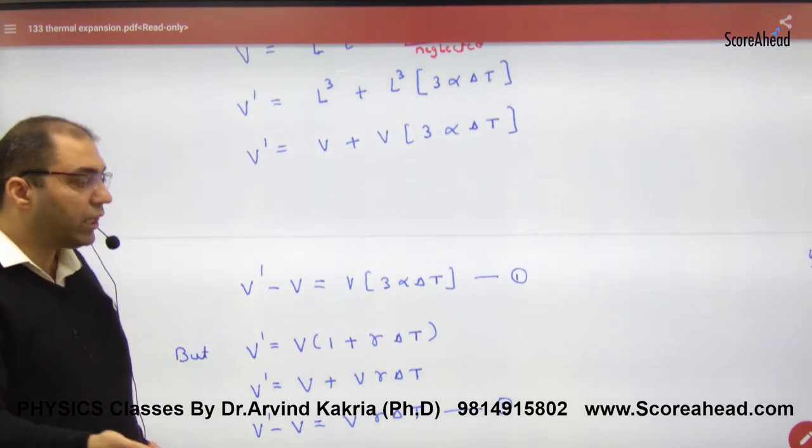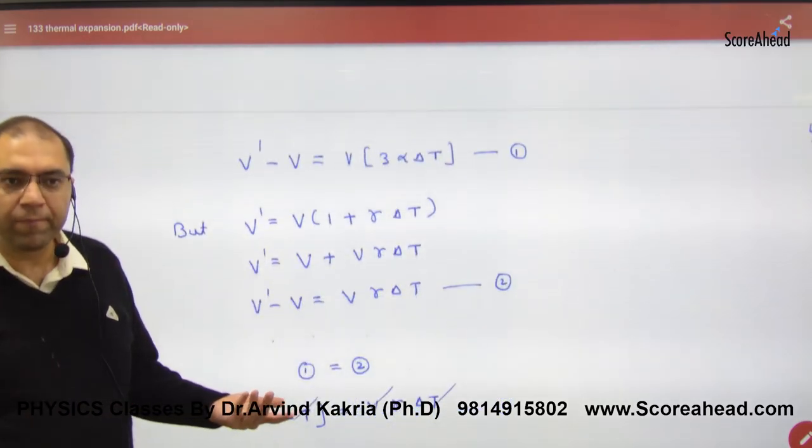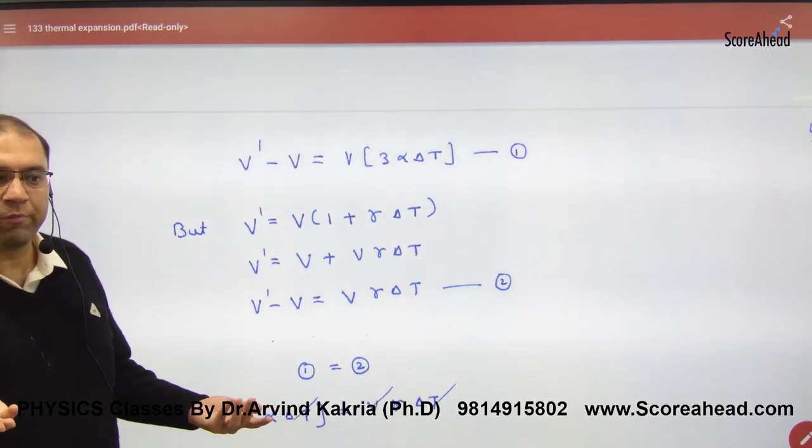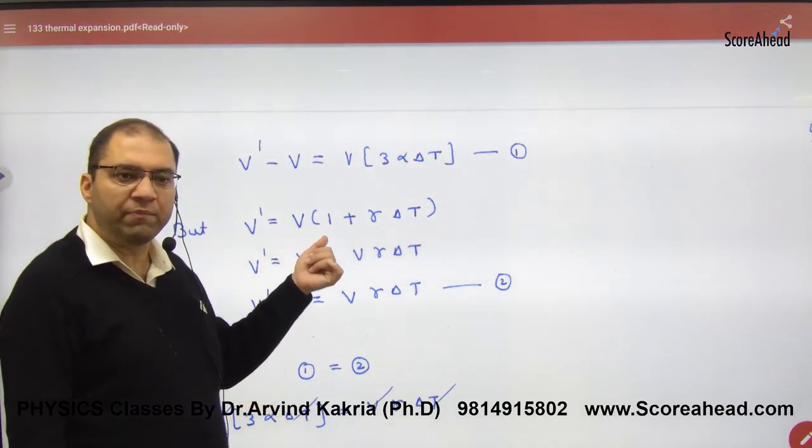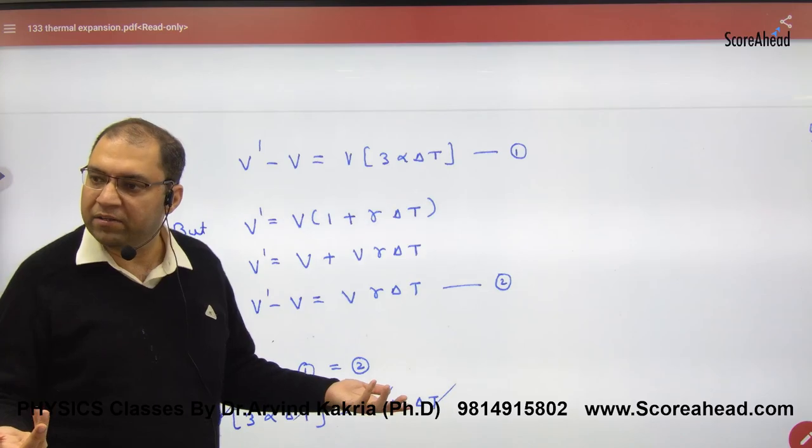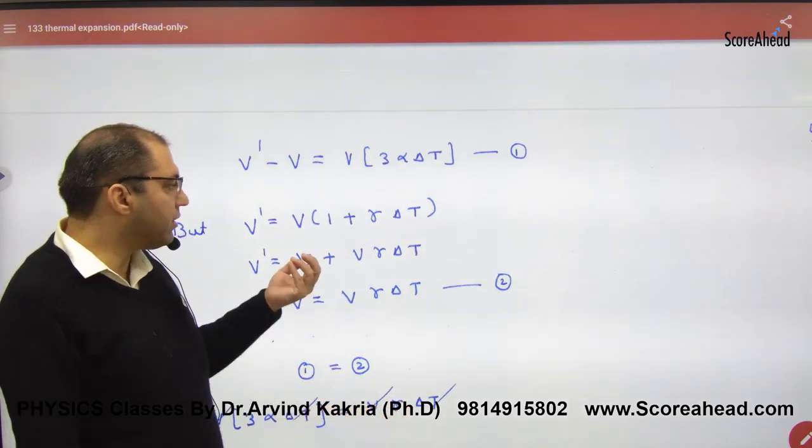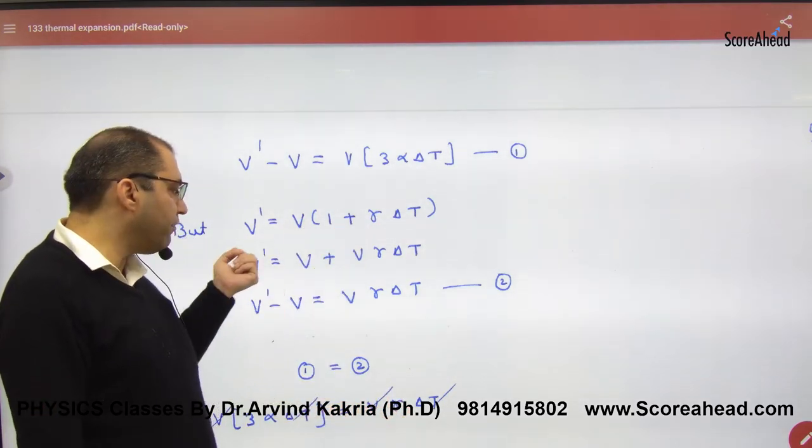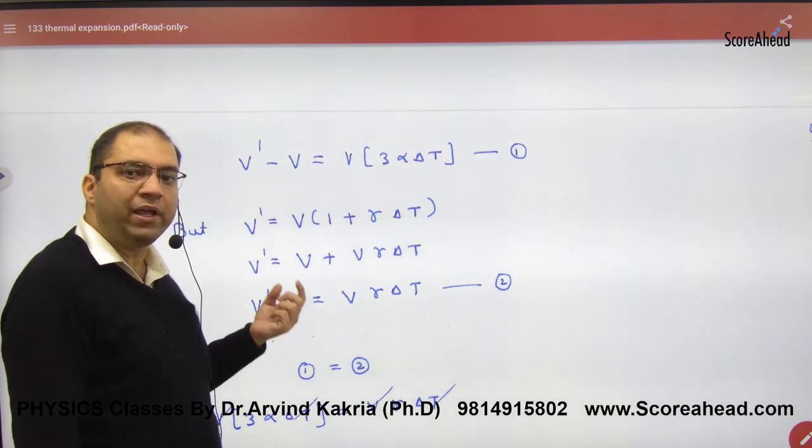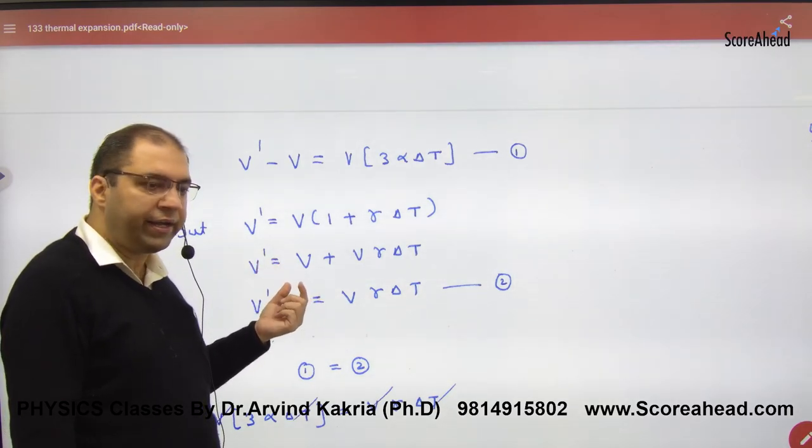Now someone said, you put this formula straight. Volume, V dash is V into 1 plus gamma into delta T. You can put the answer. So when you put it like this, then open it. What will happen? V dash minus V. So you have removed V dash minus V in terms of gamma.